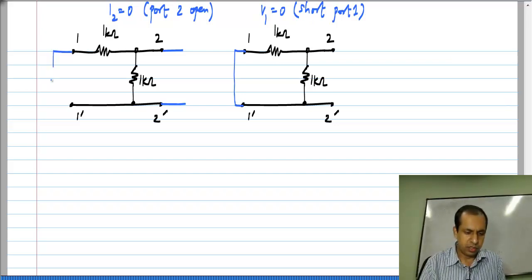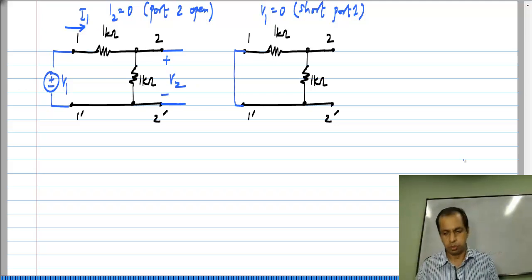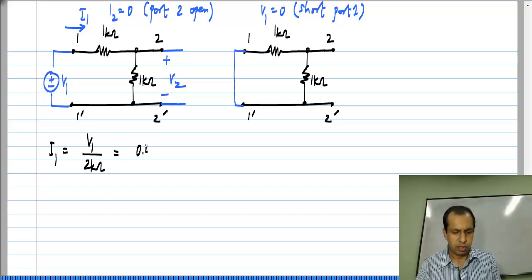And in the first case I apply voltage V1 and measure I1 and also V2. Now, it is clear that this series combination of two 1 kilo ohm resistors is across V1. So, I1 is V1 divided by 2 kilo ohms which equals 0.5 millisiemens times V1.